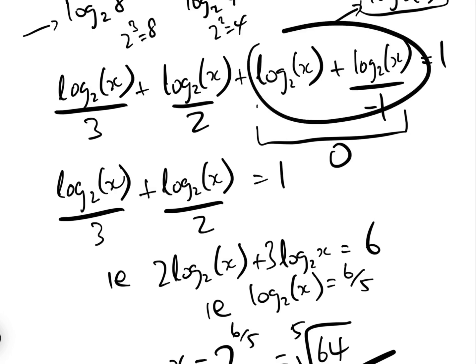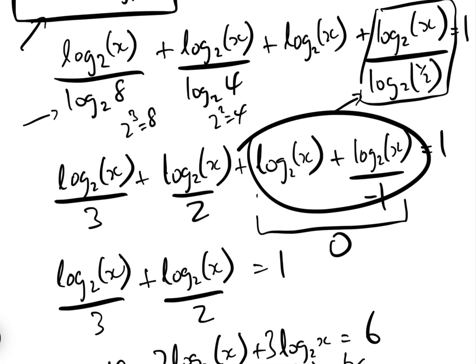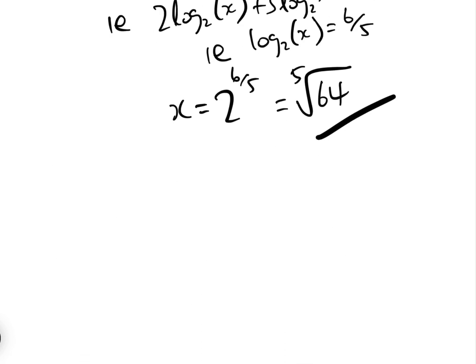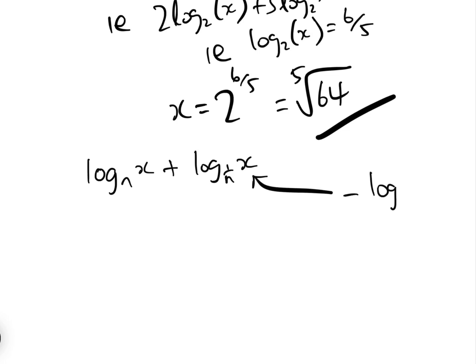Going back to that cancellation: if we have log to the base n of x plus log to the base one-over-n of x, well log to the base one-over-n of x always equals minus log to the base n of x, by using the same change of base formula we just used. So log to the base n of x plus log to the base one-over-n of x always equals zero. That's a useful trick.